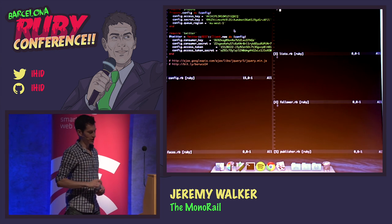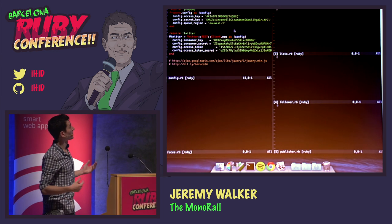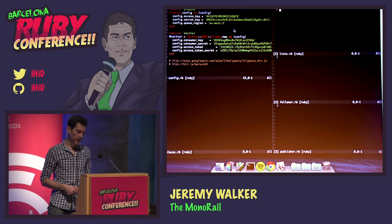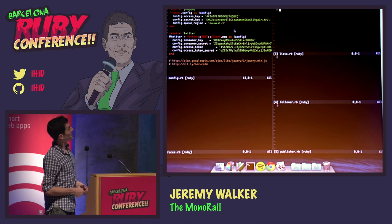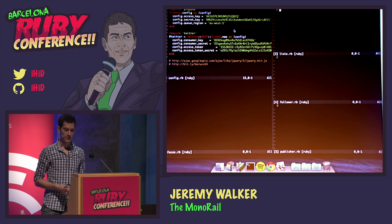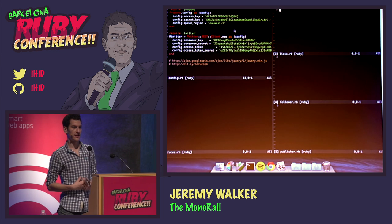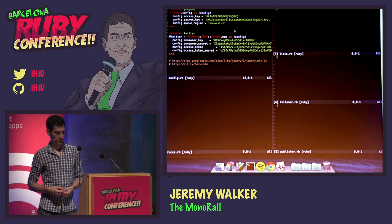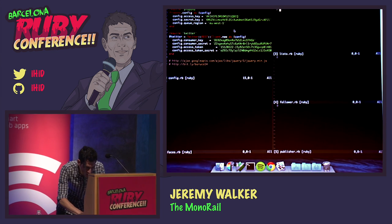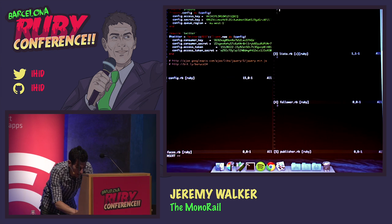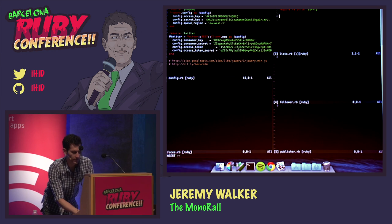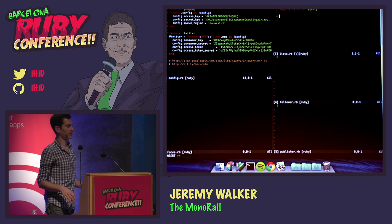We've got two quick bits of configuration. One for Propono, which just sets up with an Amazon access key and secret key and a queue region — in this case EU-West-1. And then a Twitter setup with slightly different syntax but similar, which sets a consumer key and consumer secret, and also an access token and access secret that are my personal ones. So we've got a few different scripts we're going to quickly write, the first of which is the script for making lists.